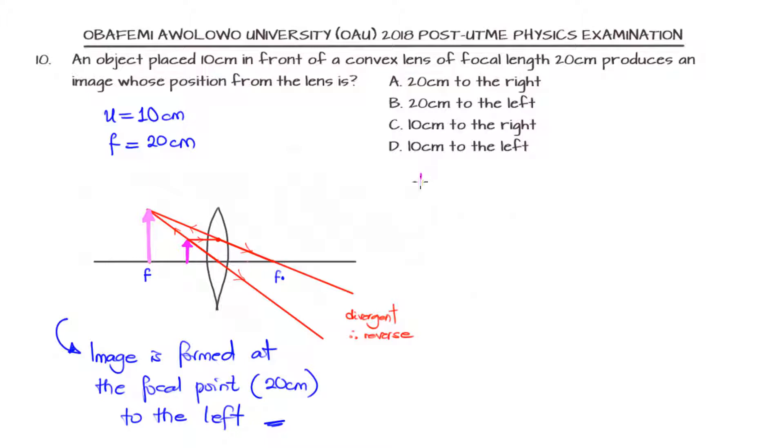But if you don't really have a good grasp of this, the other way to go about it is to use the lens formula. The lens formula is saying that 1 over f equals 1 over v plus 1 over u, where v is the image distance, u is the object distance given as 10 centimeters, and f is the focal length given as 20 centimeters.